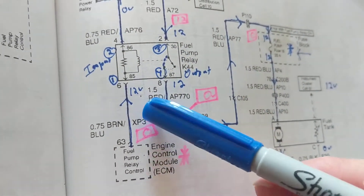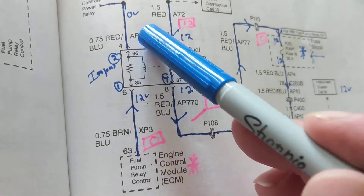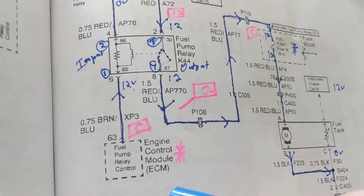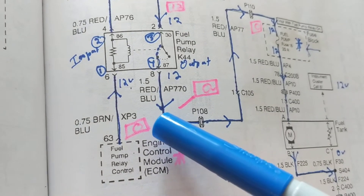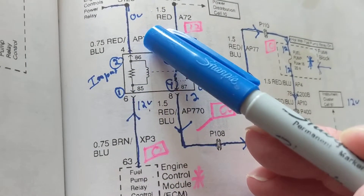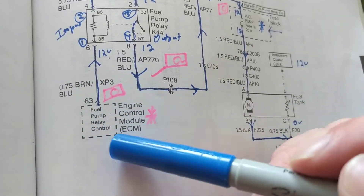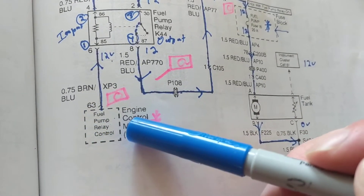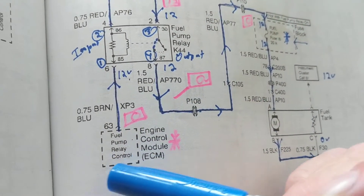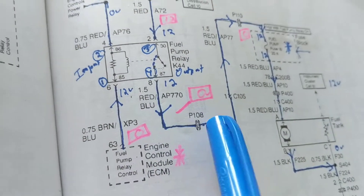Now we need two things for a relay to be activated. First we need B+ at 12 volts, and we need a ground — or it could go through other relays like you saw in the Toyota Camry where you have three or four relays responsible for the fuel pump. So we have to figure out which one is the B+ and which is the ground. As you can see, this dotted line means this is a computer module. ECM could be for Ford, PCM for GM, ECU for Toyota — it doesn't matter. I'm explaining the theory, and they're all basically the same.